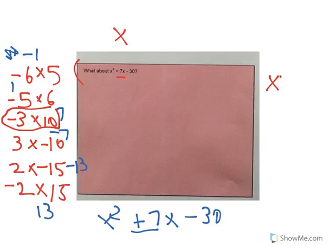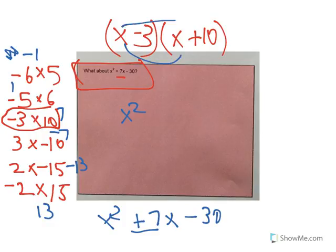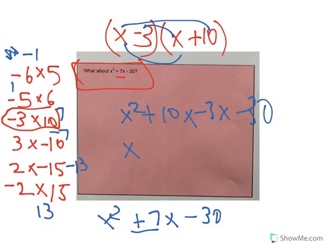So the answer is going to be x minus 3 times x plus 10 — that's the only way of factoring this expression. Multiplying it out using FOIL: first gives x squared, outer gives plus 10x, inner gives minus 3x, last gives minus 30. Combining like terms gives x squared plus 7x minus 30, which matches our original. You can always check your answers.